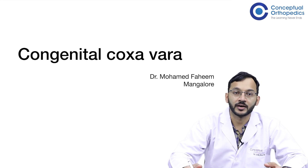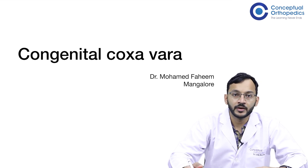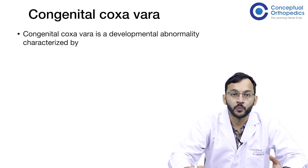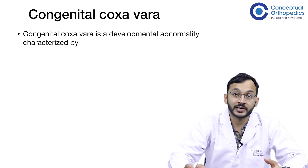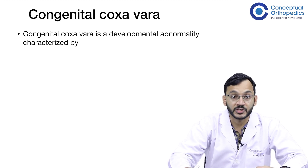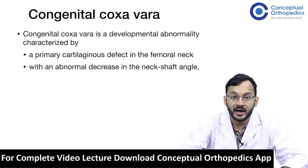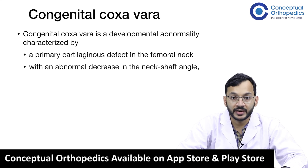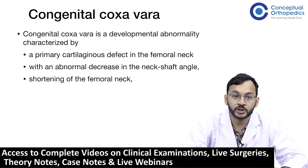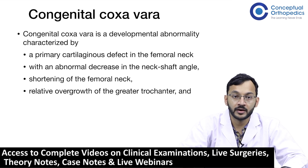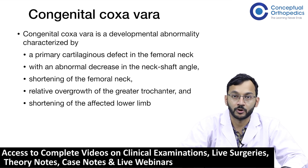Hello and welcome to this session on congenital coxa vera. Congenital coxa vera is a developmental abnormality characterized by a primary cartilaginous defect in the femoral neck. It has an abnormal decrease in the neck shaft angle, which is why it is known as coxa vera. Along with this, we can see shortening of the femoral neck, relative overgrowth of the greater trochanter, and shortening of the affected lower limb.